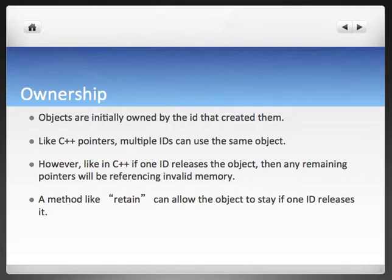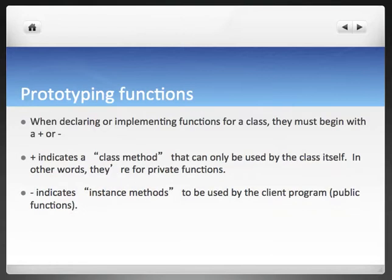Let's talk about ownership. Objects are owned by IDs that point to them. Multiple IDs can own - much like C++ pointers, the IDs can point to the same object. However, like with C++ pointers, if the object it's referencing goes out of scope or otherwise gets released by another ID, then any other IDs using the object become invalidated. Using the retain keyword, the object will remain in the system when any ID releases it. However, retain will keep the object until it gets explicitly deleted.